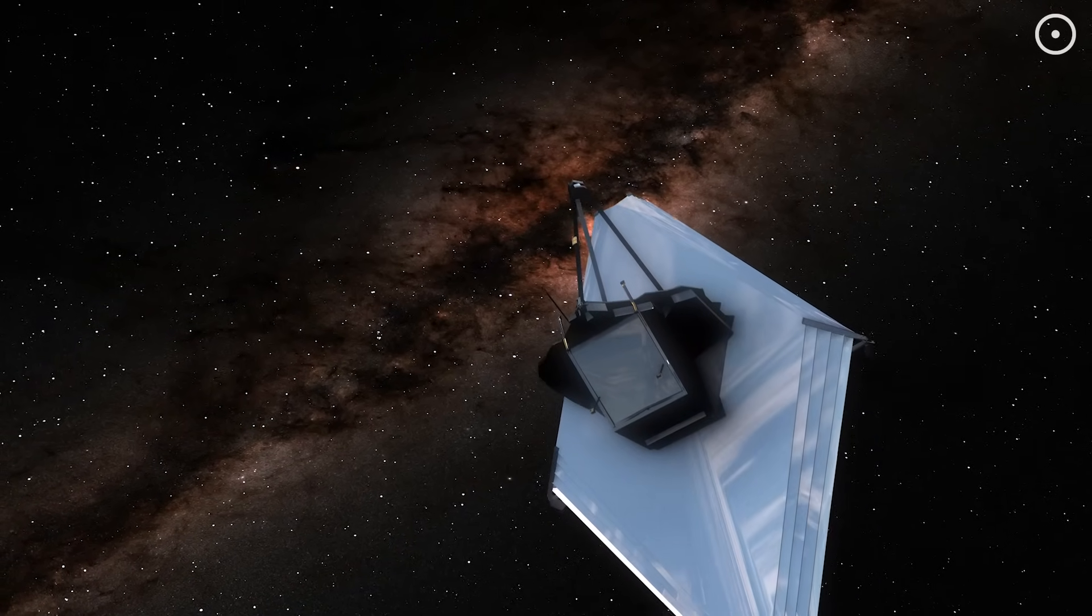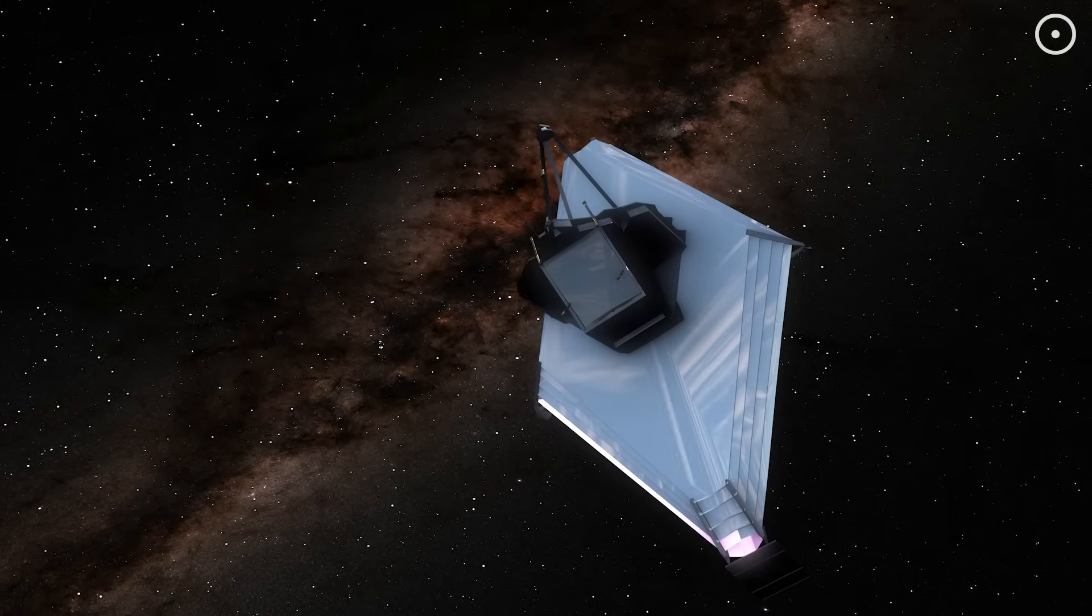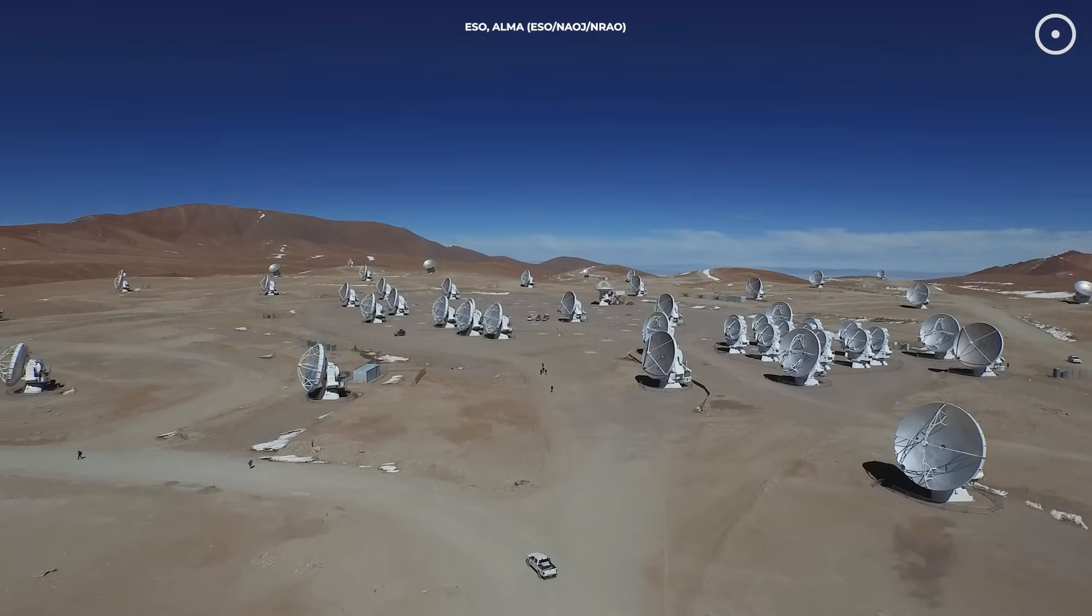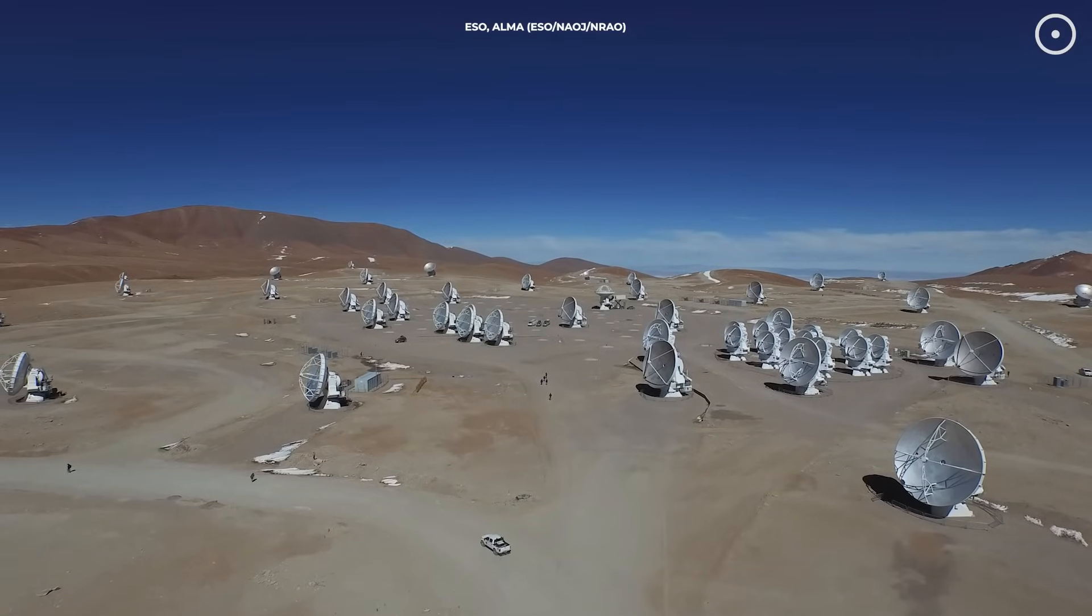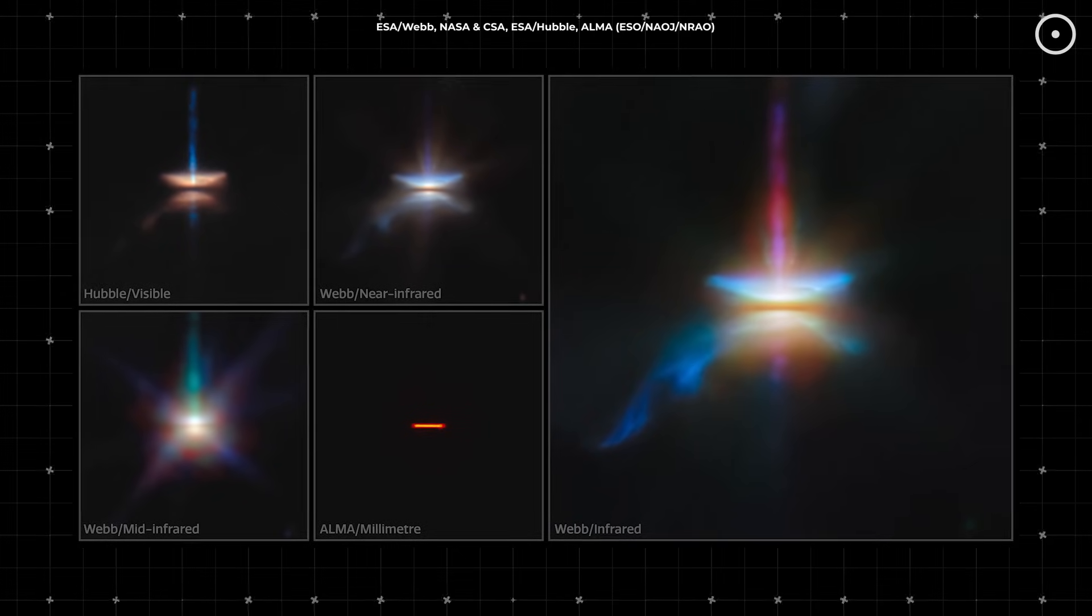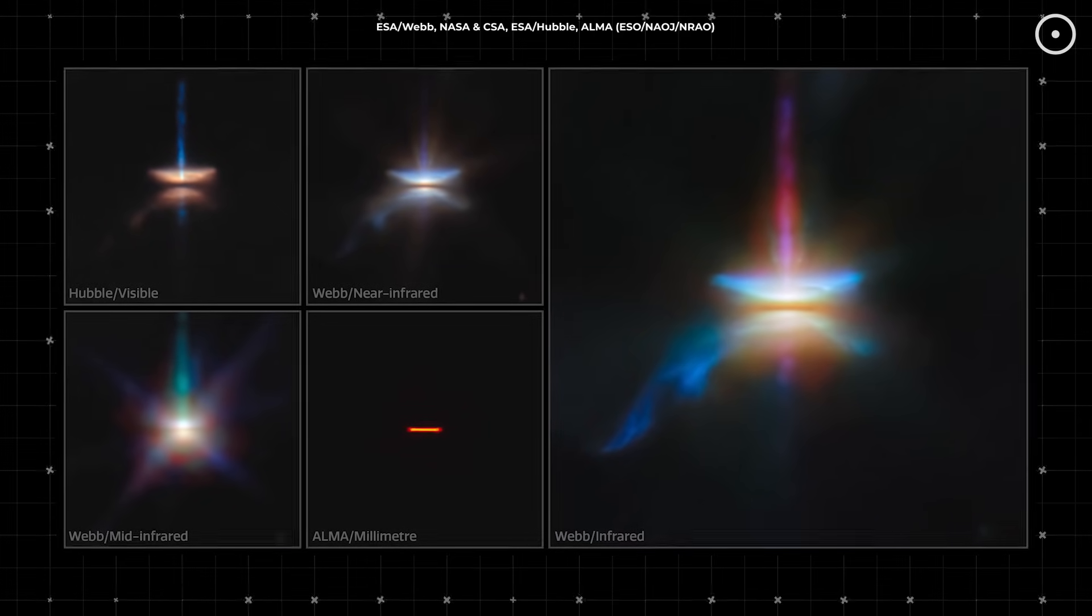But Webb isn't working alone. We've got Webb looking at the infrared light, Hubble capturing the visible light, and another telescope called ALMA looking at even longer wavelengths. Together they're giving us the most complete picture of a baby star we've ever had.